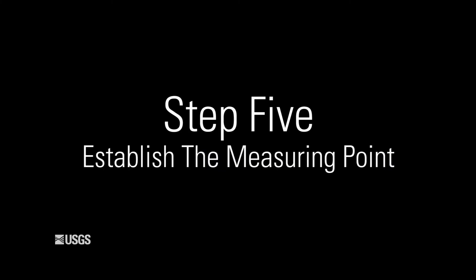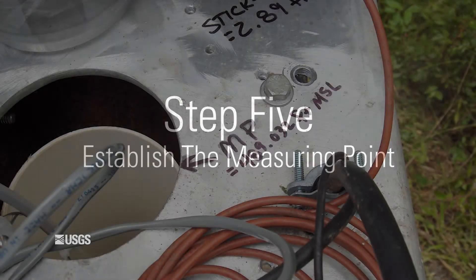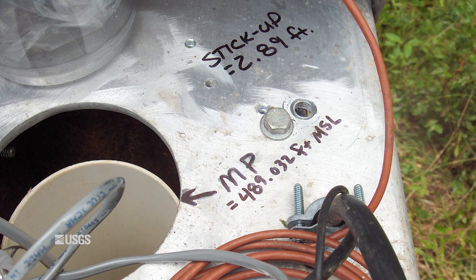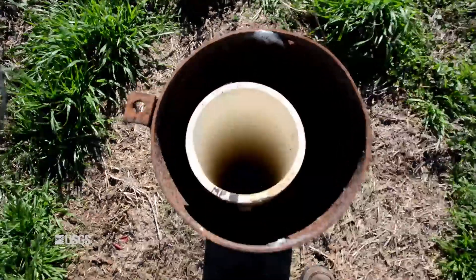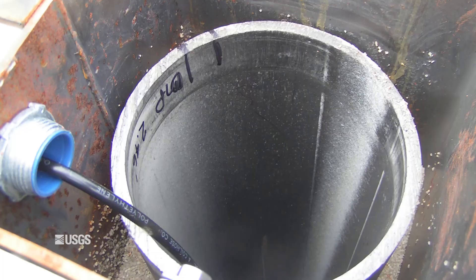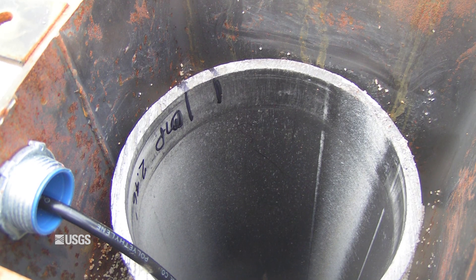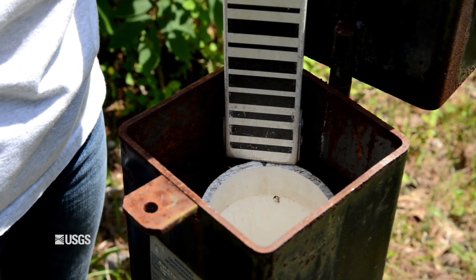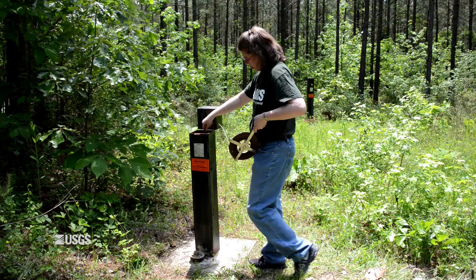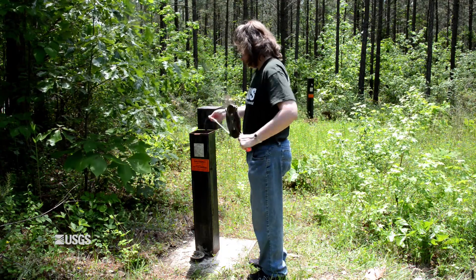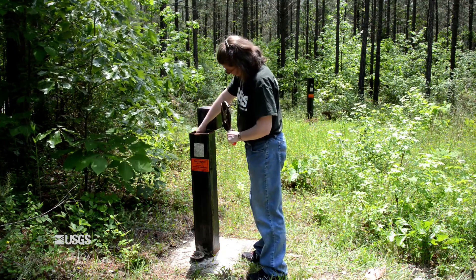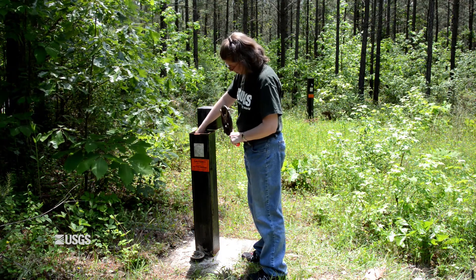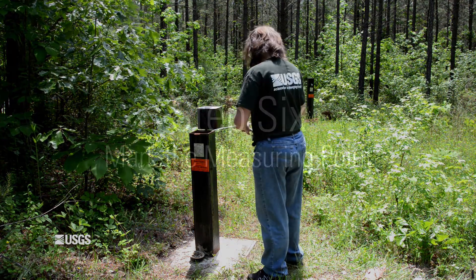Step 5: Establish the measuring point. The measuring point is a permanent, stable, clearly defined, and marked reference point used to measure the water level in a well. It is often located at the top of the casing in an observation well or at an access point at a production well. To establish a measuring point for a well, choose a point on the casing where a leveling rod could be set directly on it and a measuring tape can hang freely into the well when it is in contact with the measuring point. If the casing does not have a horizontal rim, it is preferable to establish the measuring point on the high or low side of the rim.